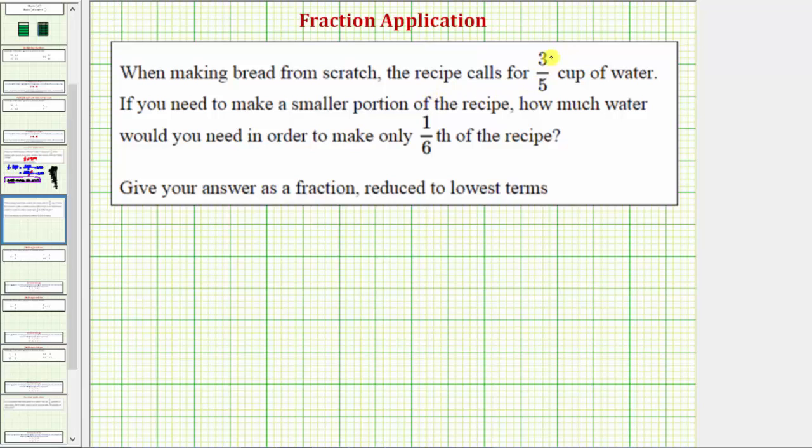When making bread from scratch, a recipe calls for three-fifths of a cup of water. If you need to make a smaller portion of the recipe, how much water would you need to make only one-sixth of the recipe?